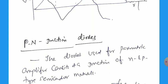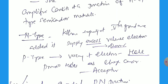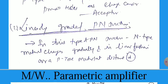Here we also use the P-N junction diode as a parametric amplifier. The diodes used for the parametric amplifier consist of a junction of N-type and P-type semiconductor materials. N-type is formed when impurity of the fifth group is added — it supplies excess valence electrons and is called the donor. P-type produces holes as charge carriers. Now the first case is the linearly graded P-N junction. In this type, the N-type material changes in a linear fashion over the P-type material distance d.